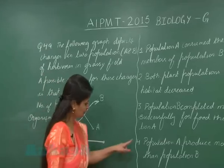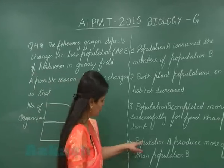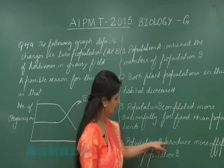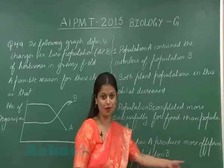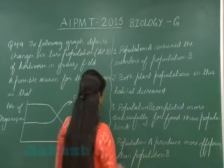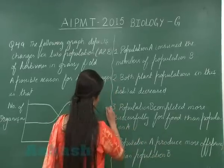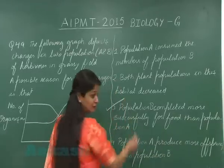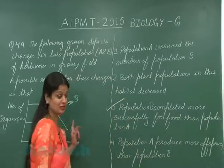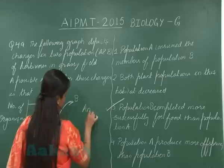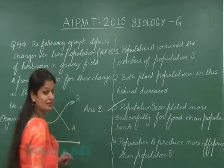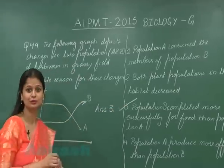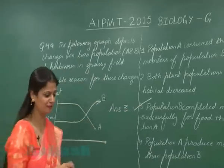Now, option 4 states population A produces more offspring — again, this is wrong based on the graph. So the right option for question 49 is option number 3. Let us move on to question number 50.